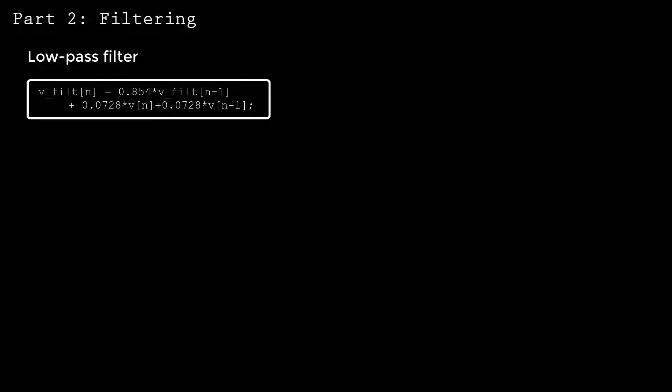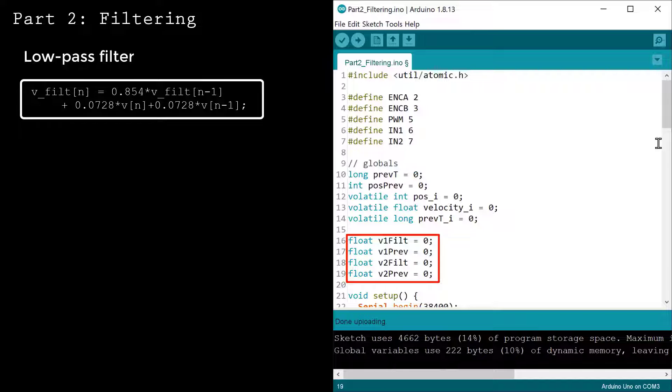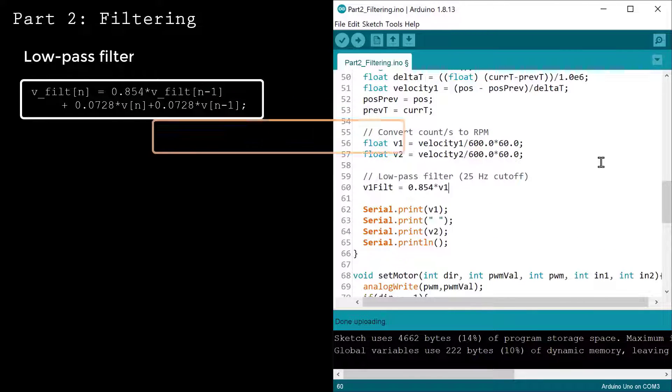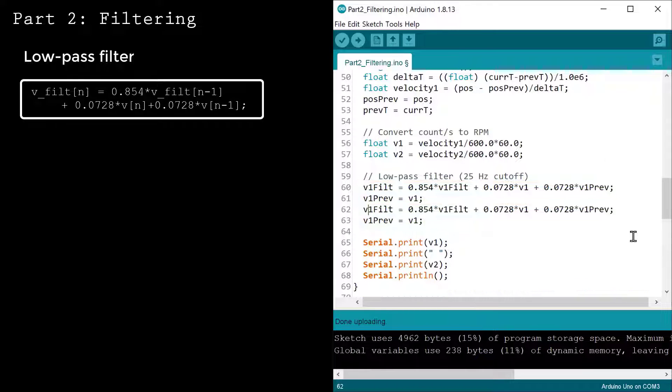Let's implement the filter on the Arduino. First, I'll define global variables for the raw and filtered speed. Now, I'll compute the filtered speed using the update equation. I'm also storing the raw speed for use in the next iteration. To complete the code, I'll set a delay of 1 ms to maintain a consistent sampling frequency.